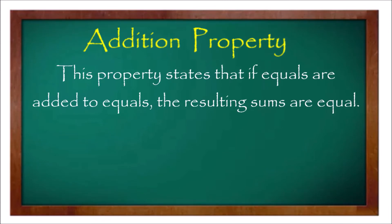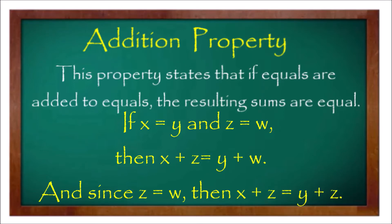The addition property states that if equals are added to equals, the resulting sums are also equal. If x equals y and z equals w, then x plus z equals y plus w. Since z equals w, we also have x plus z equals y plus z.